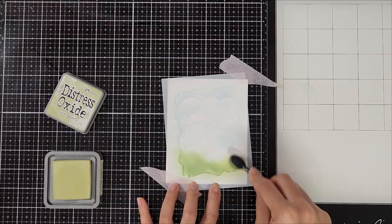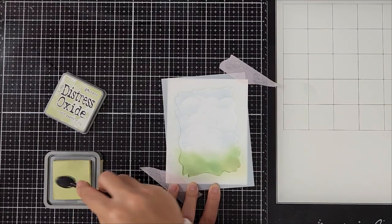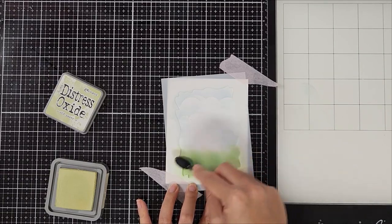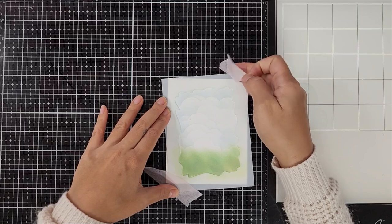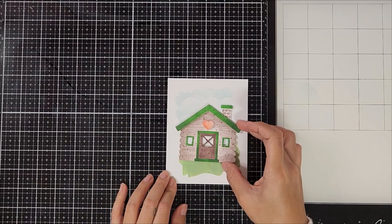So what I'm trying to do is create a scene for my cabin to sit on. Now that I'm done, I'm removing the stencil and you can see here that it fits nicely with my cabin scene.